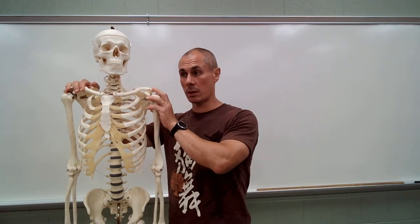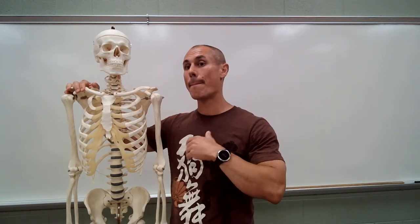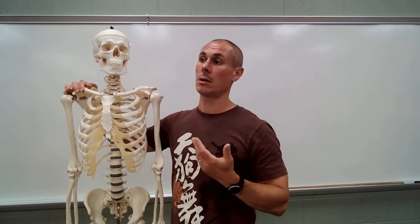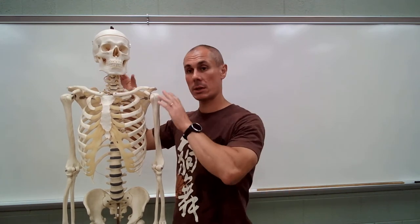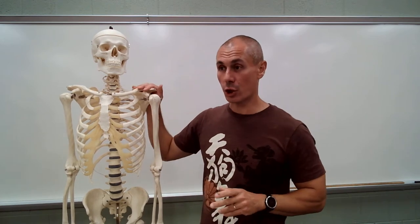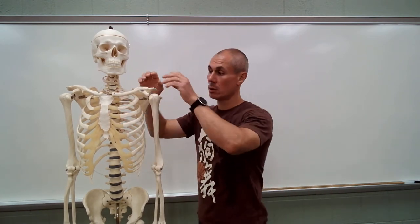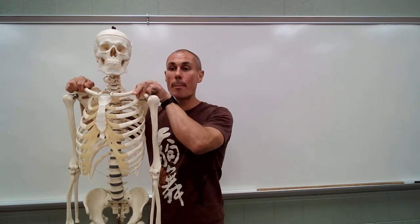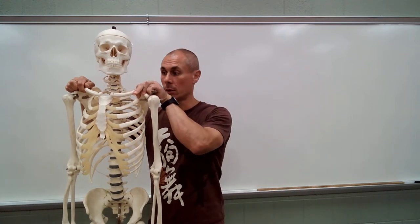Next we're going to talk about the appendicular skeleton — limbs and girdles. We're going to start with the upper. The girdle braces and supports the limbs. Here you have the pectoral girdle.